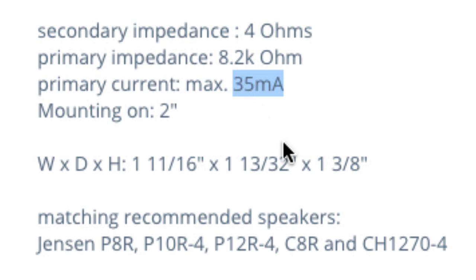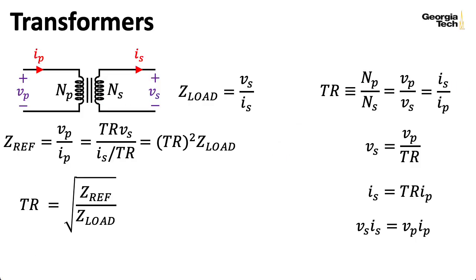In the last lecture, we computed a plate current of 37 milliamps. Close enough. So if we plug those numbers into this expression here, we have a reflected impedance of 8.2 kiloohms, a load impedance of 4 ohms. And if we divide those and take the square root of that, we get a turns ratio of 45.3, which isn't anywhere on that webpage.